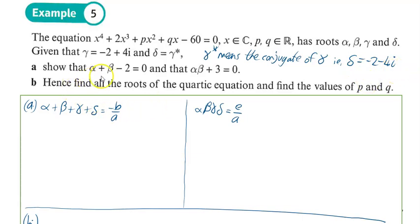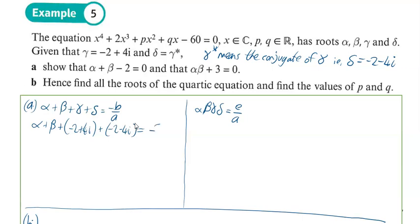It says show that alpha plus beta minus 2 equals 0. We're going to do this using the sum of the roots, which equals minus b over a. So alpha plus beta plus gamma plus delta equals minus 2 over 1, which is minus 2. Adding the real parts gives minus 4, and plus 4i minus 4i equals 0. Therefore alpha plus beta minus 2 equals 0, as required.